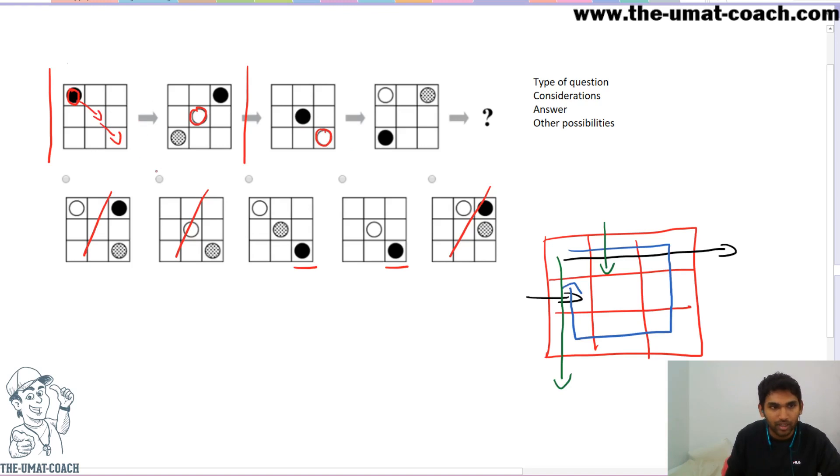Therefore it lands up over here. And the next one is going to be here, like this one. We can just tick D and move on.